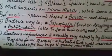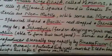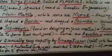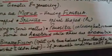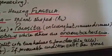Bacteria reproduce asexually very rapidly by a process called binary fission. In this process, a parent cell splits into two equal halves to form two daughter cells.